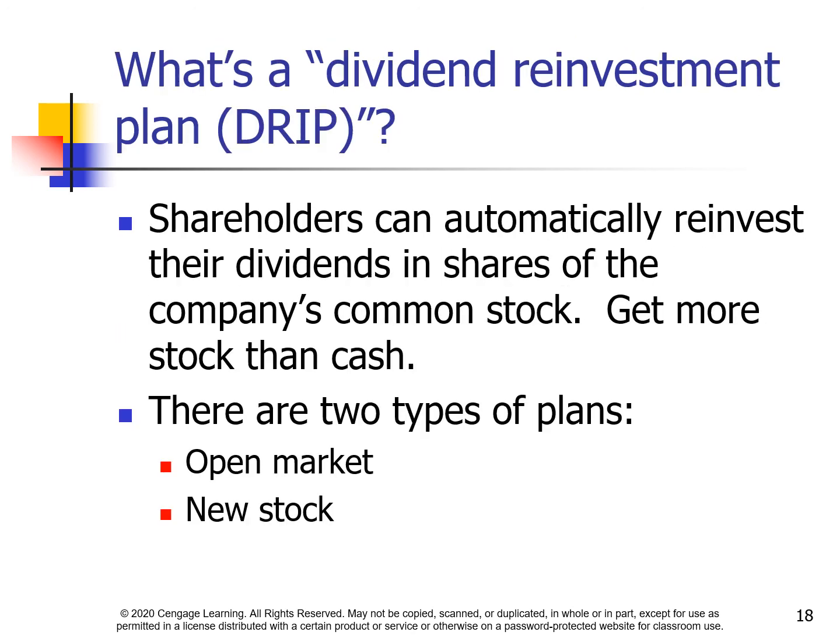What is a dividend reinvestment plan? Shareholders can automatically reinvest their dividends in shares of the company's common stock, receiving more stock than cash. There are two types of plans: the open market plan and the new stock plan.